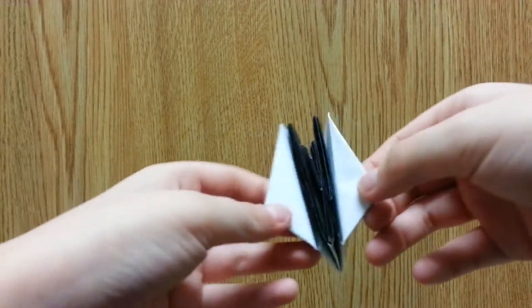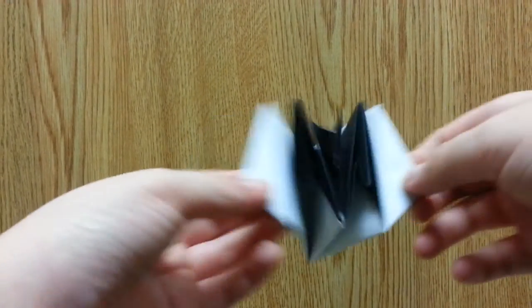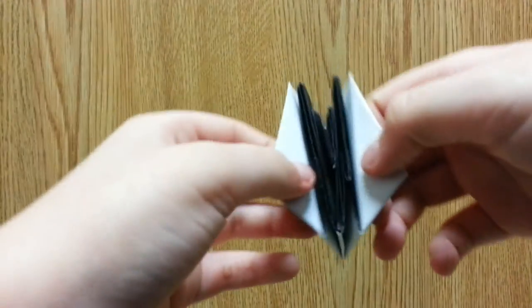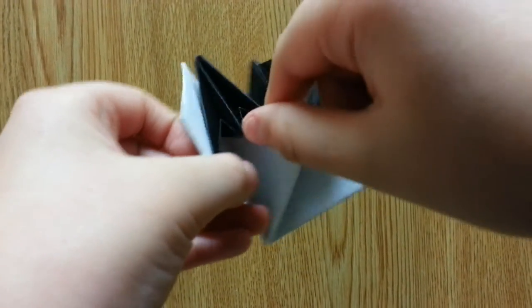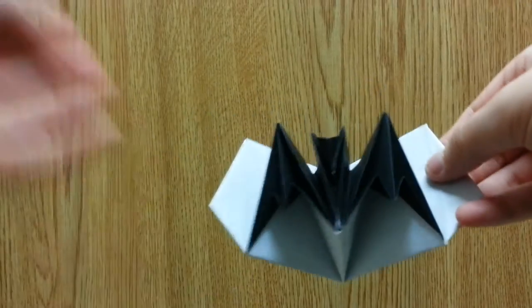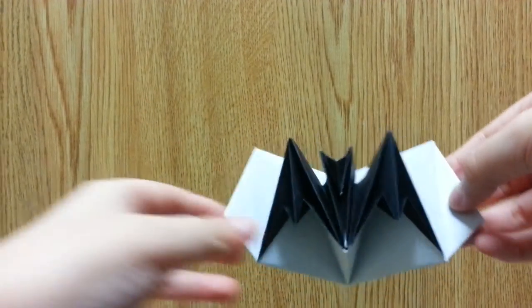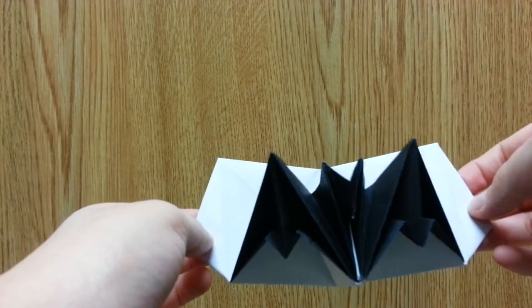Alright. Here's the bat. The wings, you have to do reverse folds. This model is kind of intermediate.